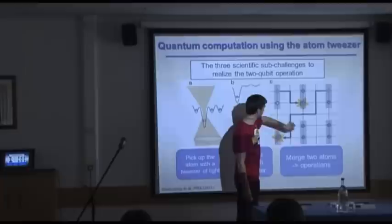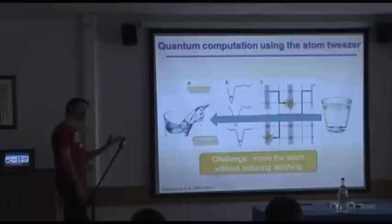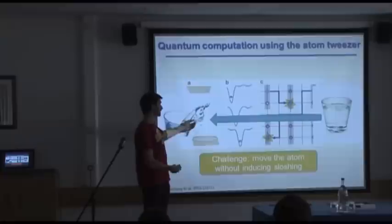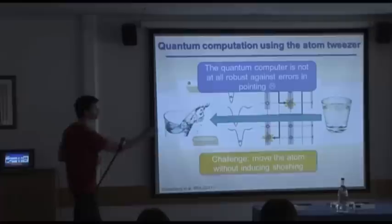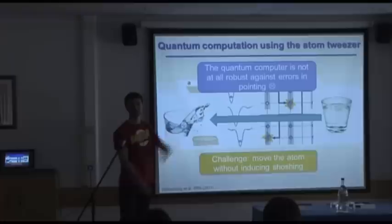Now we come back to the water, because the atom should not be thought of as a ball. The atom is described by a wave function, and the wave function can behave very much like water — that's why the challenge is very analogous to just taking a glass of water and moving it and avoiding the sloshing. Technically, sloshing means a mixture of higher excited states, and higher excited states means errors in the computation.